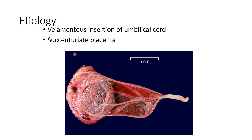When the blood vessels are passing to the succenturiate lobe, those vessels may also come in front of the presenting part. So these are the main reasons for Vasa Previa.